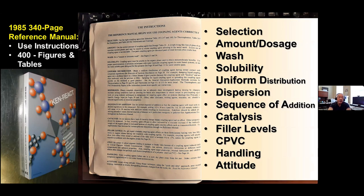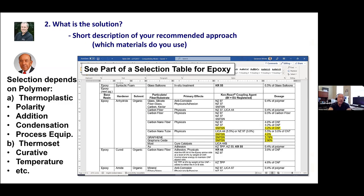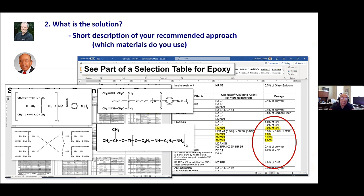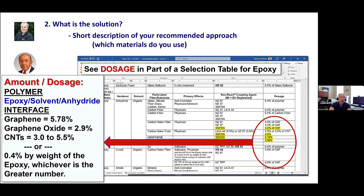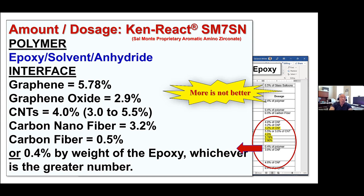The details of selection are in the reference manual — lots of information on polarity, curatives, which one to use. It requires a detailed discussion because these are the chemistries that apply depending on whether it's a water-insoluble system, water-emulsifiable, or water-soluble. In epoxy, we've found you need 5.7% to 8% of an aromatic amino zirconate to couple graphene oxide. For CNTs you need 2.9%, varying between 3% and 5.5%, or 0.4% by weight of the epoxy — whichever is the greater number. More is not better — the exact amount is exactly what's needed.